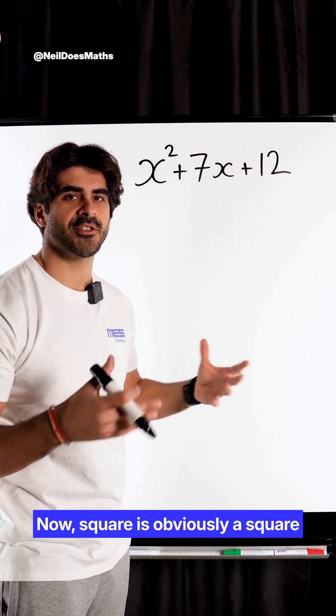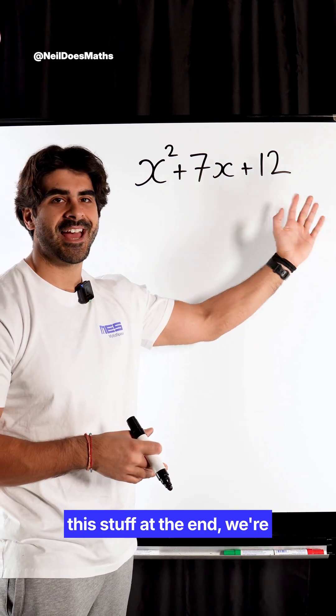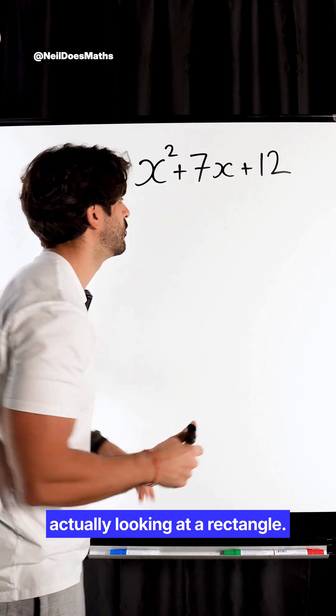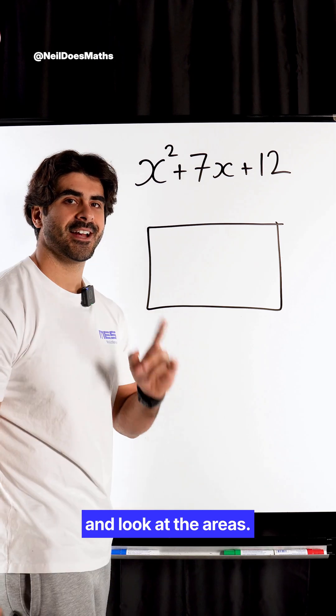Now, square is obviously a square where all the side lengths are the same, but with all this stuff at the end, we're actually looking at a rectangle. So let's draw it, and we're going to partition it and look at the areas.